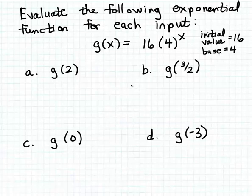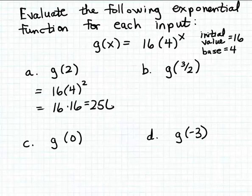Let's evaluate g for a few inputs. Let's start with an easy one, let's evaluate g of 2. That's just going to be 16 times 4 squared. We'll substitute 2 for x in the formula for the function g. 4 squared is 16, so we have 16 times 16, which is 256. So that evaluation is very straightforward.